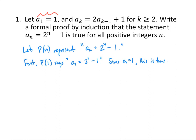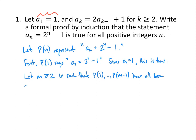Now we get to the more complicated part: the induction step. We're assuming that we've proved the statement is true for one or more positive integers, and then we want to prove that the next case must also be true. So we say: let m greater than or equal to 2 be such that P of 1 through P of m minus 1 have all been proved to be true.